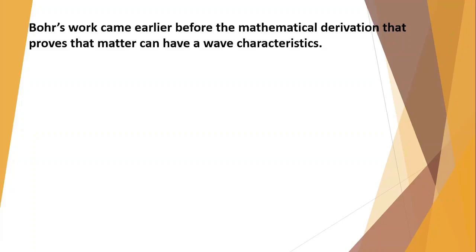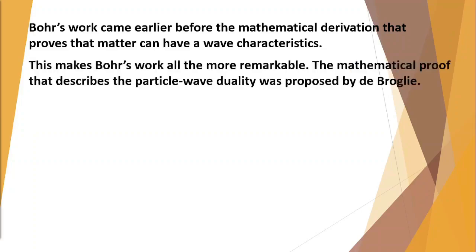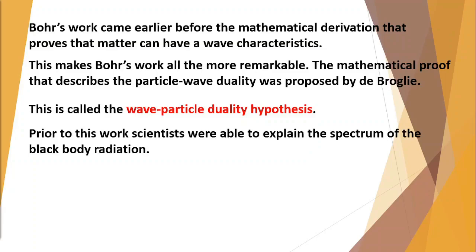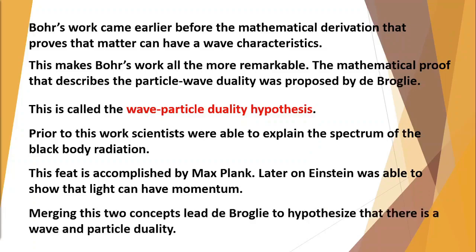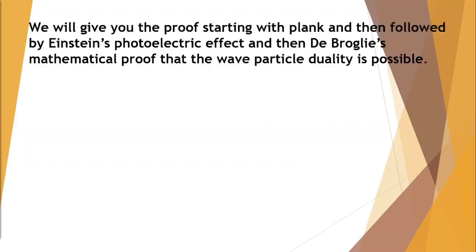Bohr's work came earlier before the mathematical derivation that proves that matter can have a wave characteristics. This makes Bohr's work all the more remarkable. The mathematical proof that describes the particle-wave duality was proposed by de Broglie. This is called the wave-particle duality hypothesis. Prior to this work, scientists were able to explain the spectrum of the black body radiation. This feat is accomplished by Max Planck. Later Einstein was able to show that light can have momentum. Merging this two concepts lead de Broglie to hypothesize that there is a wave and particle duality.